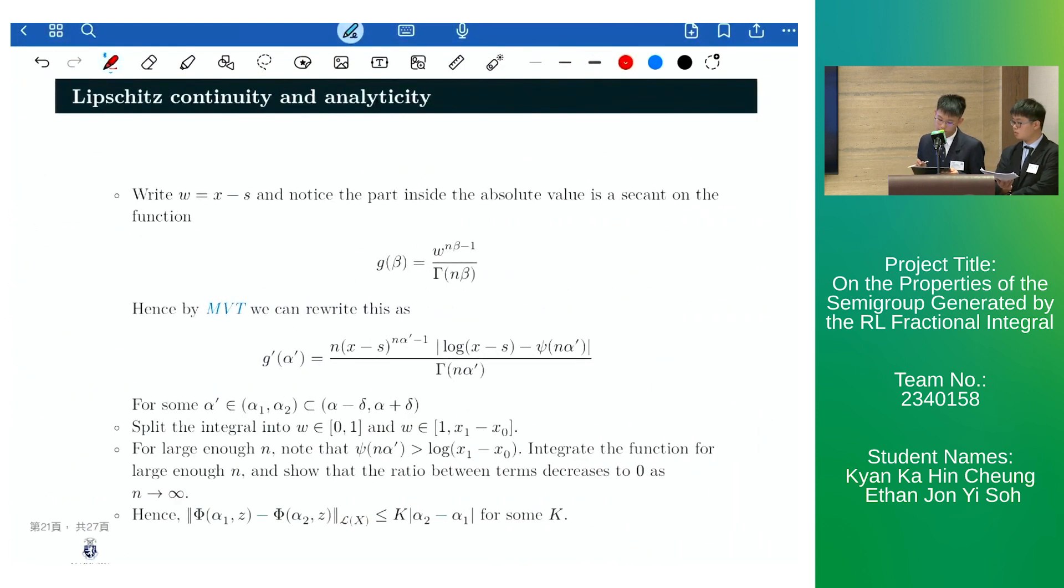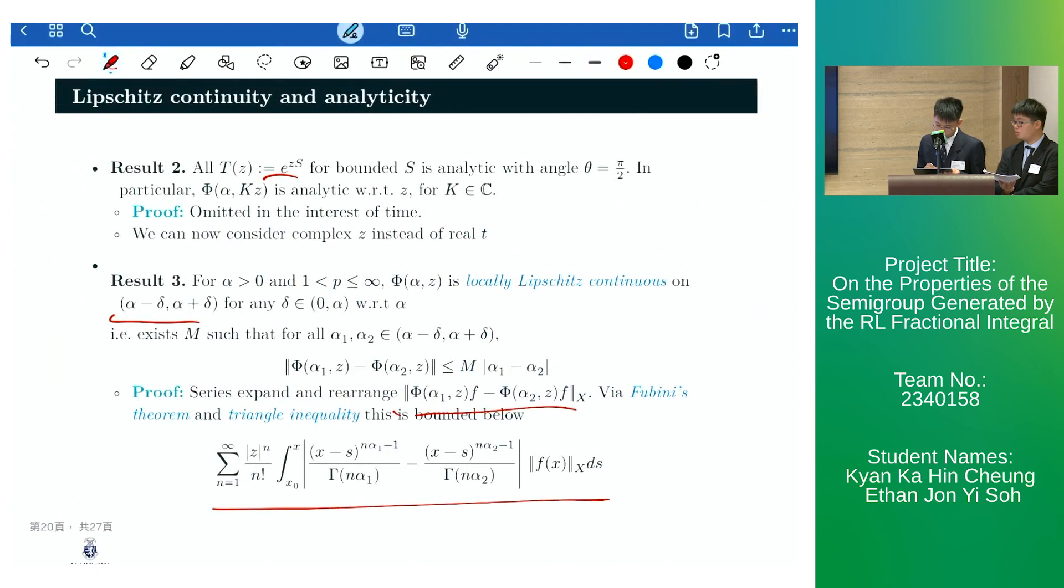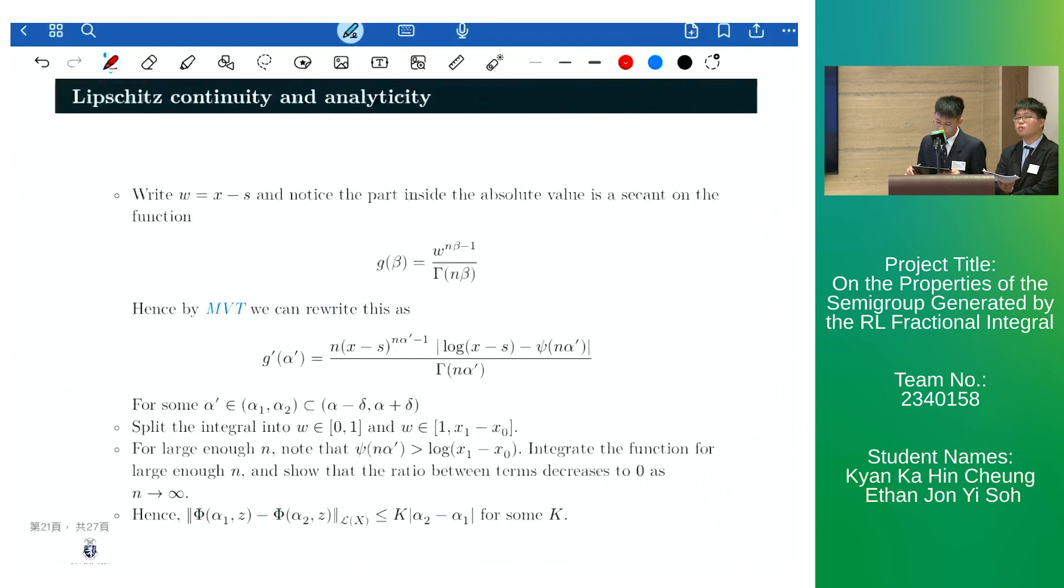we can then use the substitution w equals to x minus s to notice that the part inside the absolute value is actually a secant of the following function. And so, by the mean value theorem, we can then rewrite the part inside the absolute value as the following.